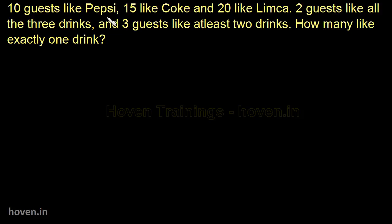10 guests like Pepsi, 15 like Coke, 20 like Limca, 2 guests like all the three drinks, and 3 guests like at least two drinks. How many like exactly one drink? This question can be very easily solved by using our Venn equations. So let us first start by writing what has been given to us.